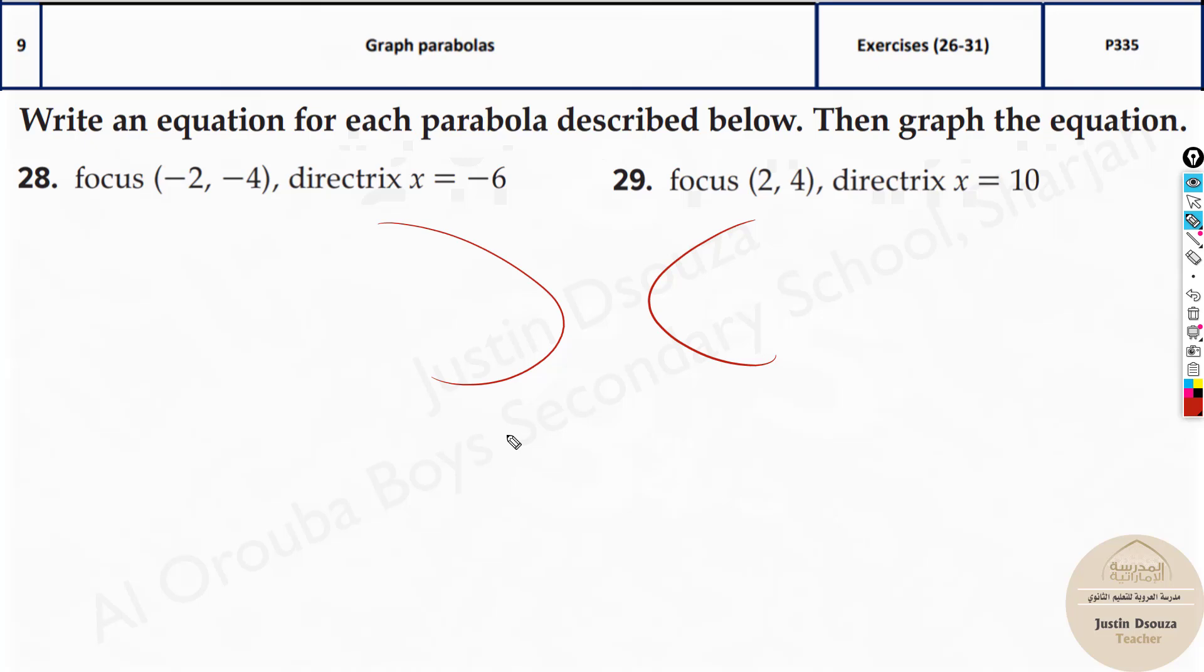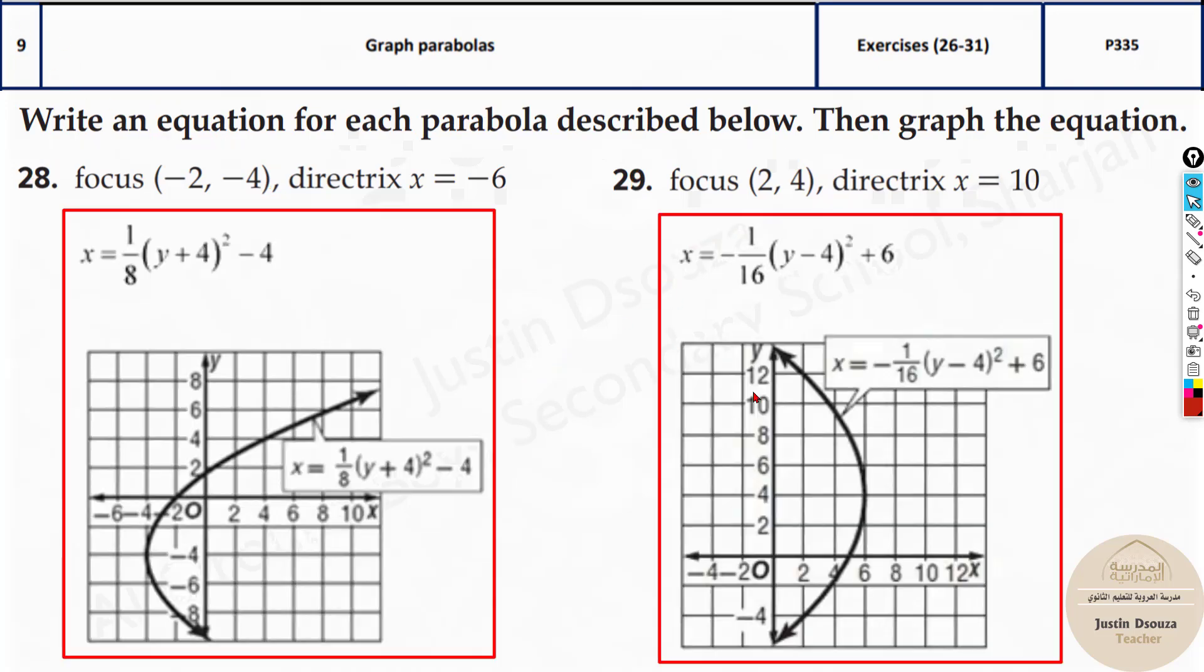Now here the standard form would be x is equal to a into y minus k the whole square plus h. This is the standard form. You can use the focus formula directrix formula and solve it. But it'll be a bit lengthy. But since you can see whenever the focus and directrix is given there is a shortcut method. But you need to know all the four options. So now let's look into the options over here.